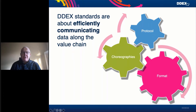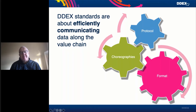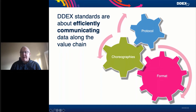We also define choreographies, which is essentially the order in which messages should be exchanged in a particular business transaction. Many standards have more than one message format to complete a business transaction, and everybody needs to know what order those should be exchanged in and what the trigger points are. Lastly, we define the actual message protocols by which messages get exchanged — up until recently that has been primarily using secure FTP sites with defined directory structures and file naming conventions.